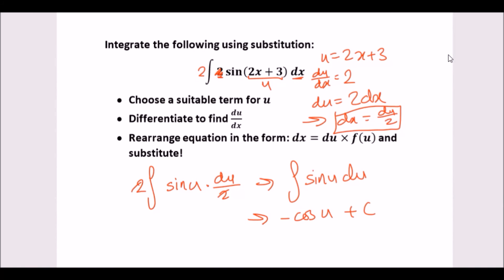And finally, to wrap this up, all we need to do now is replace u with the original term. So hence we can say our solution is minus cos(2x plus 3) plus c. And that's how you integrate using substitution.